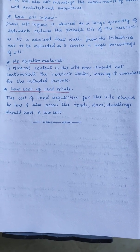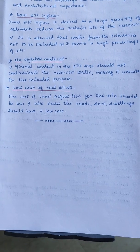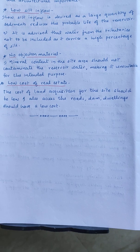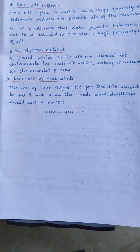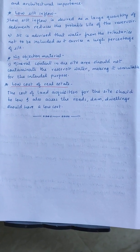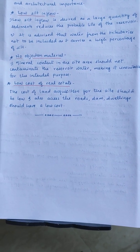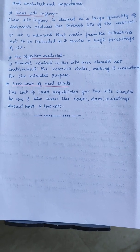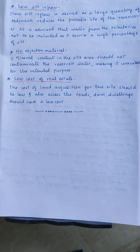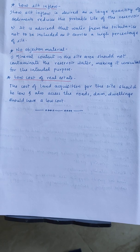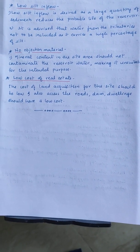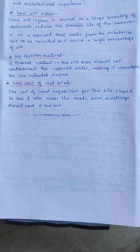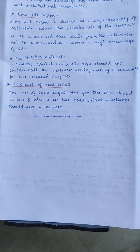The next factor is no obstruction material. The mineral content in the site area should not contaminate the reservoir water, making it unsuitable for the intended purpose. As the dam is made up of earth or concrete, there are many reinforcing materials used in its construction. If the reservoir water has a large mineral content, these minerals, when they form a solution with water, may act chemically with the construction materials — this is considered a no obstruction material concern. The last factor is low cost of real estate. The cost of land acquisition for the site should be low, and access roads, dams, and dwellings should also be considered.